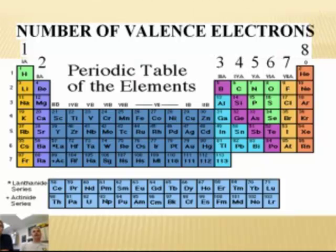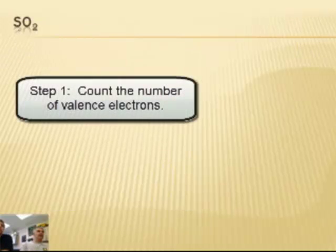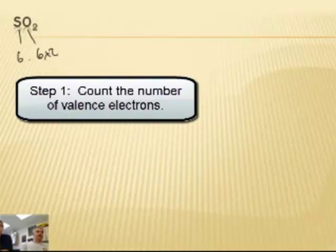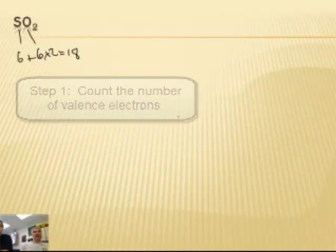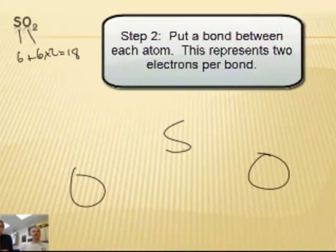Sulfur dioxide. Sulfur is right here and oxygen. They all have 6. So we've got 6 plus 6 times 2. That's 18. So sulfur is in the middle, oxygens are on the outside. We need a bond from the oxygens to the sulfur. 2, 4.